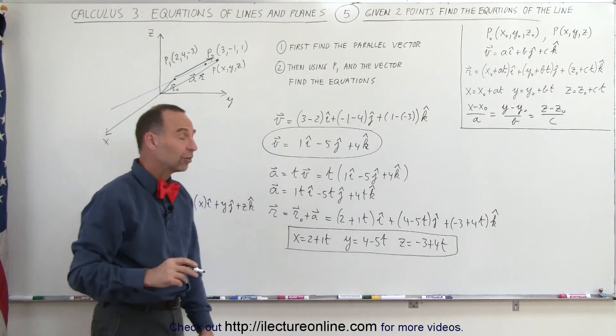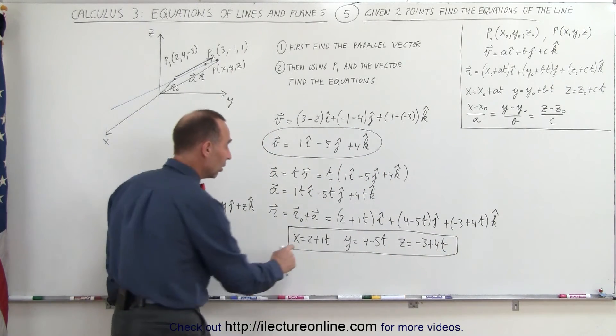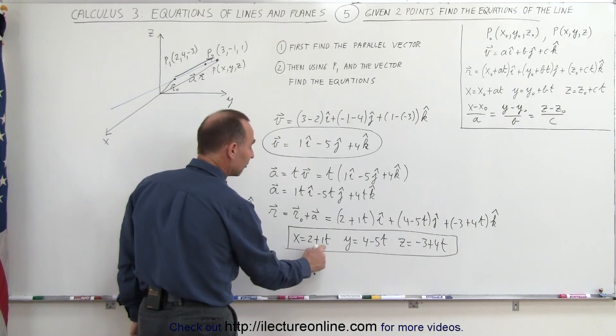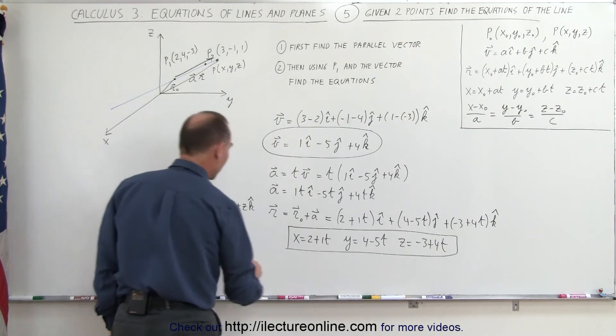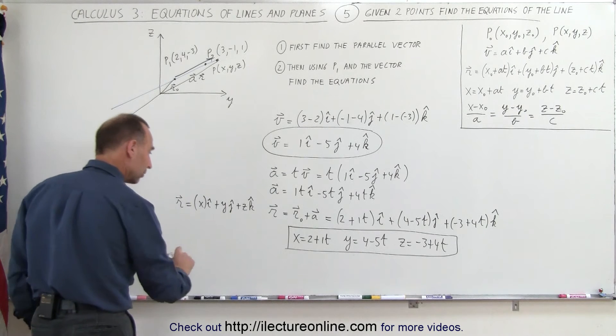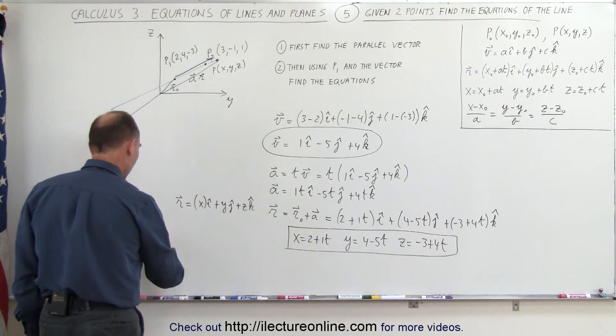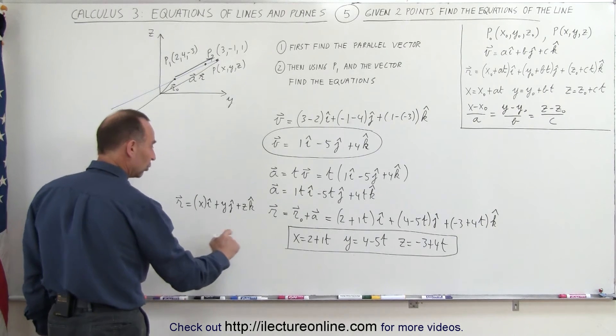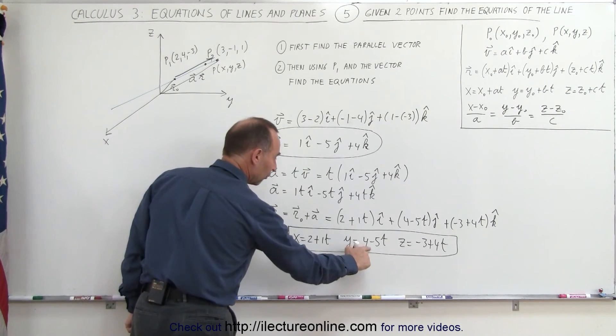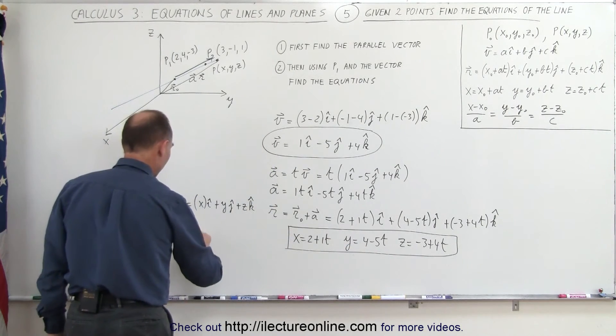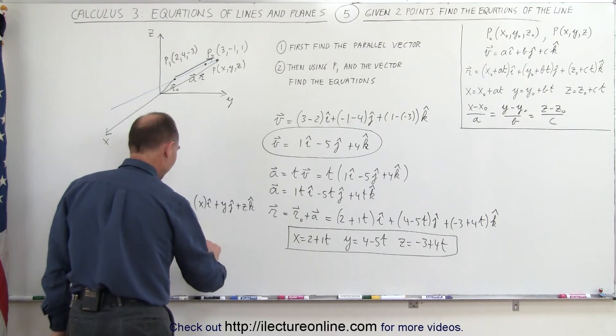Or, if you want to find the symmetric equations, we can then move the 2 over to the other side and divide by the coefficient in front of t. We can now write, let me go over here and do that, we can then say that x minus 2 over 1 is equal to...